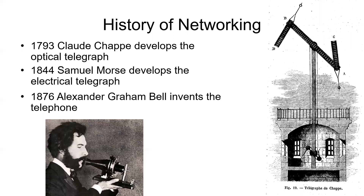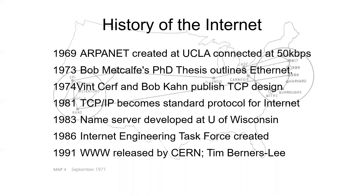In 1844, Morse developed the telegraph, and then 30 years later Alexander Graham Bell invented the telephone. The ARPANET, the precursor to the internet, was developed primarily for a few Department of Defense schools and agencies, connected at 56 kilobits per second. Ethernet was conceived in 1973. The TCP algorithm came out in 1974 and became the standard for the internet several years later.